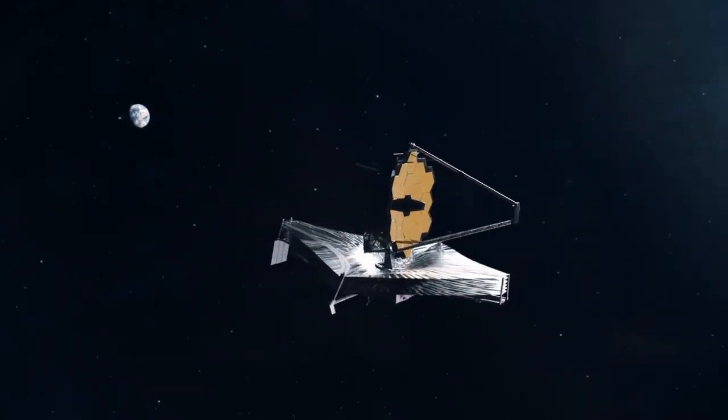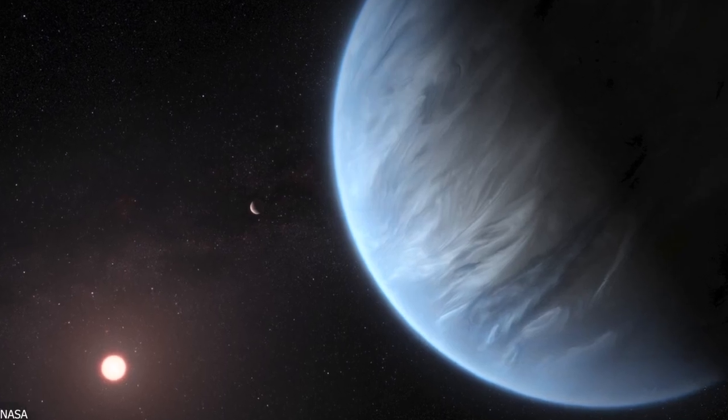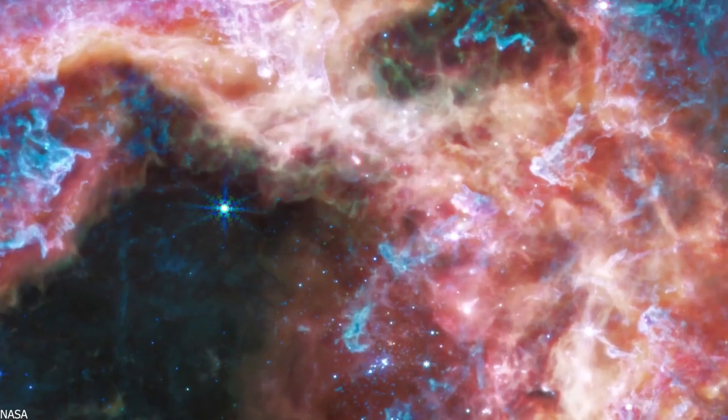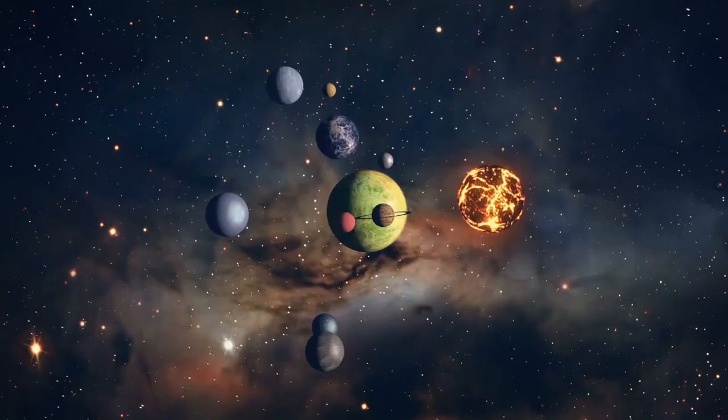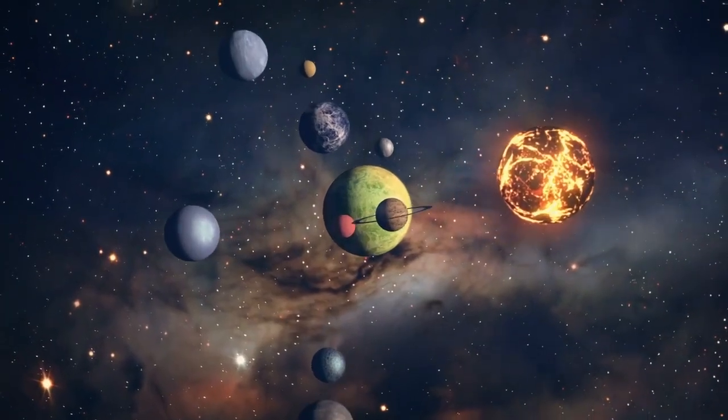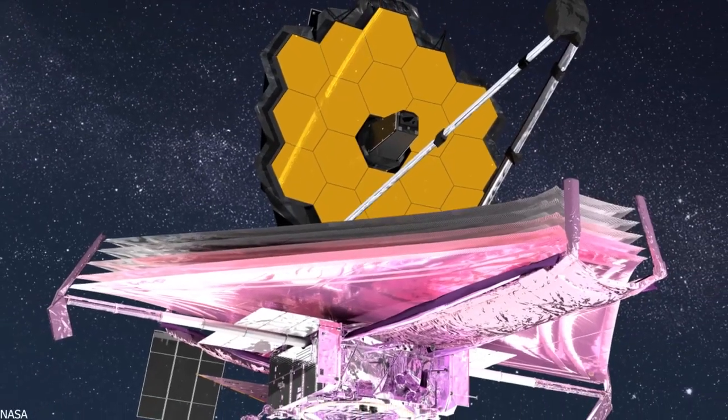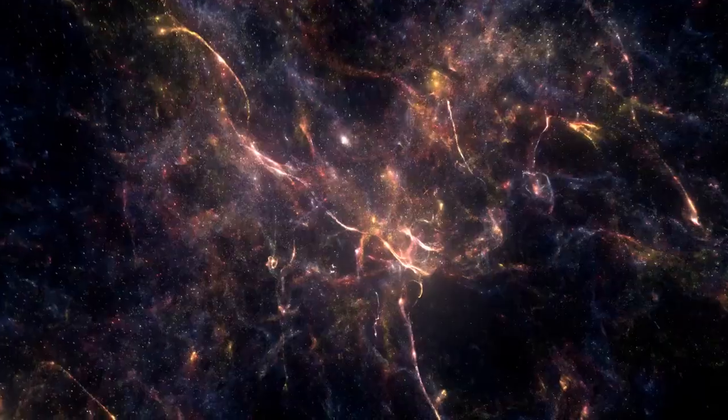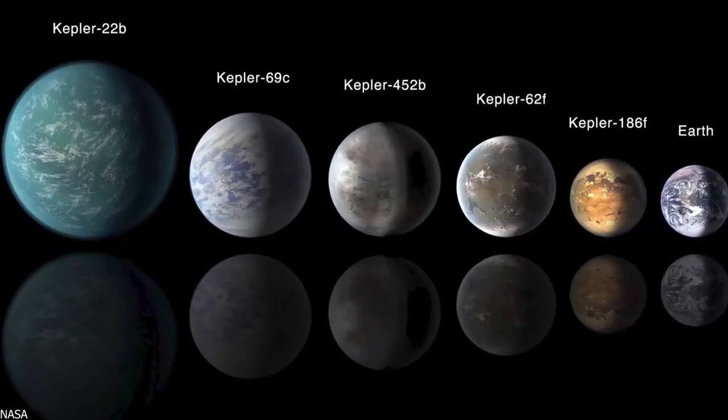While the Hubble Space Telescope has studied numerous exoplanet atmospheres over the last two decades, including the first clear detection of water in 2013, Webb's immediate and more detailed observation represents a significant step forward in the quest to discover and quantify potentially habitable planets beyond Earth. The JWST is designed not only to study the structure of the universe, but also the countless exoplanets littered across it.